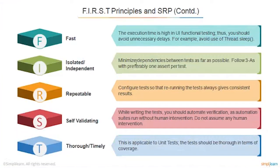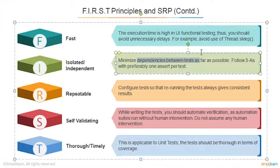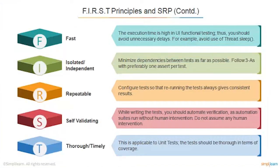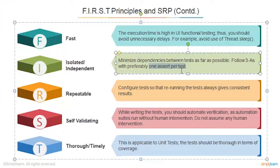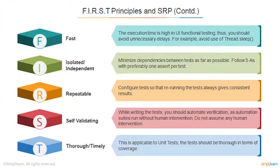Isolated and independent: minimize dependency between tests as far as possible. Your test cases should not be dependent on each other, because if one fails, it may be possible the other one will not run. Don't make your test cases dependent on each other as much as possible. Also, in your test case, insert at least one verification.